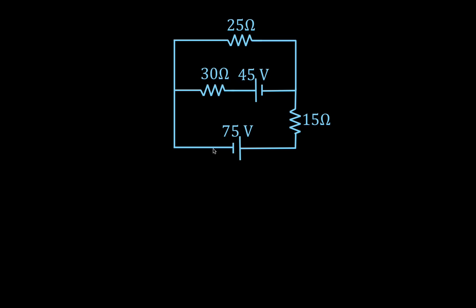The first thing we're going to do — step number one — is to identify and label the nodes. One node is node number one, the other node is node number two. Now step two is to identify the current and direction of current in each of the three branches.